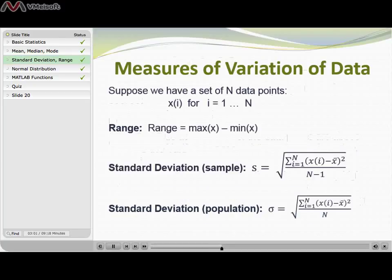We can also measure how much the data in a data set varies. A couple of different common measures for that would be range and standard deviation. Range is very simple. It just says find the largest data value in your data set, find the smallest data value in your data set, take the difference between those two and you have range.